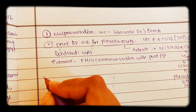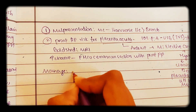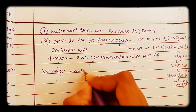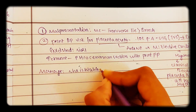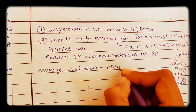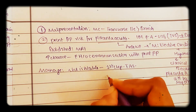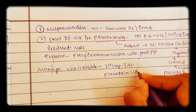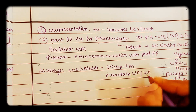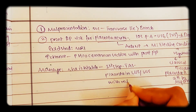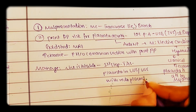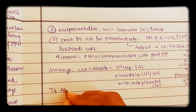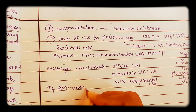Coming to management of placenta previa — when a patient with antepartum hemorrhage comes in and she is stable, the first step is a transabdominal scan. In the transabdominal scan you see the placenta and whether it is in the lower uterine segment or upper uterine segment with retroplacental clot.